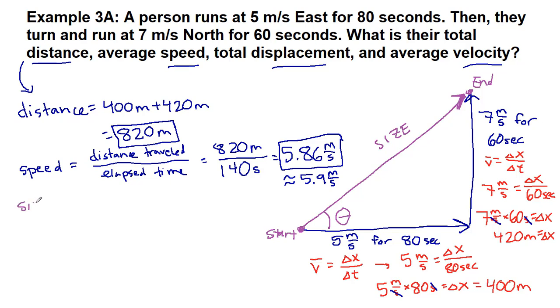So the size of our displacement comes from the idea of Pythagorean theorem. A squared plus B squared equals C squared. In this case, we have 400 squared plus 420 squared equals the size that we're looking for squared. We can take the square root of both sides and we get, for the size that we're trying to solve for, when we plug all this into our calculator, we get 580 meters.